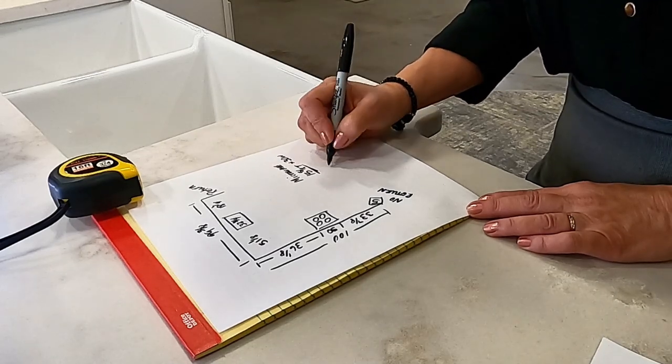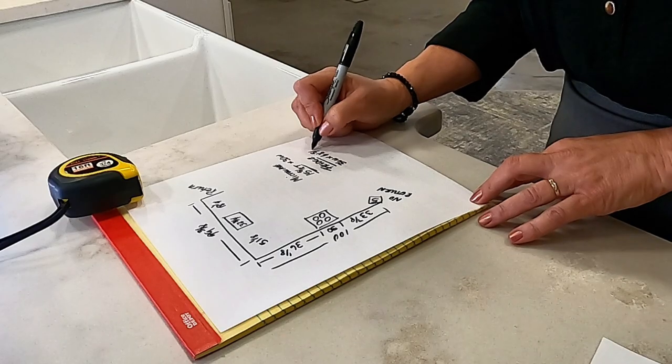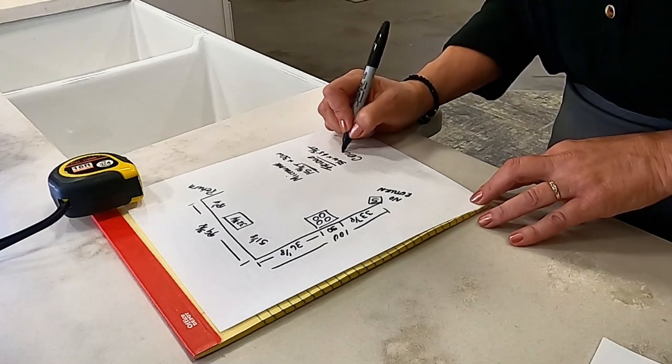And then we are going to need the size of the fridge, which is the width. Very important. And then the height. Most of the fridges are at 68, 69 inches, something like that.